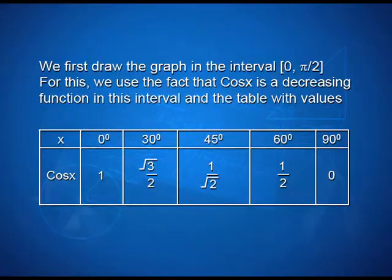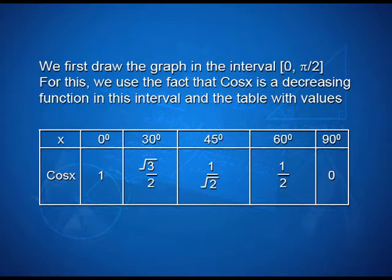Now let us take the graph of the function y = cos x. Since cos x is a periodic function with period 2 pi, it is sufficient to draw the graph in the interval 0 to 2 pi. We first draw the graph in the interval 0 to pi/2, using the fact that cos x is a decreasing function in this interval. The values are: cos 0° = 1, cos 30° = √3/2, cos 45° = 1/√2, cos 60° = 1/2, and cos 90° = 0.